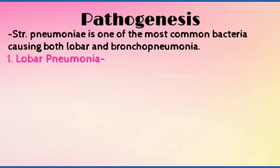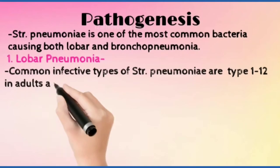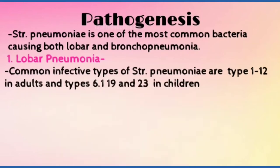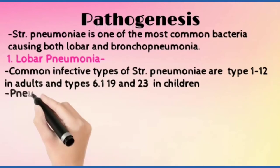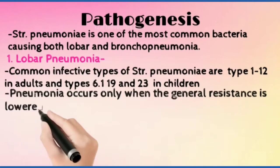Lobar pneumonia: Common infective types of streptococcus pneumoniae are type 1 to 12 in adults and type 6 and 23 in children. Pneumonia occurs only when the general resistance is lowered.